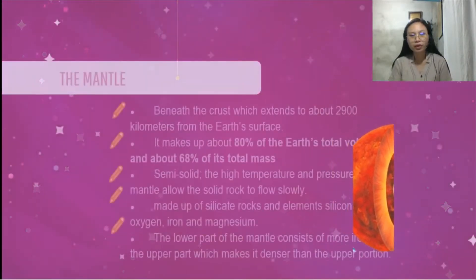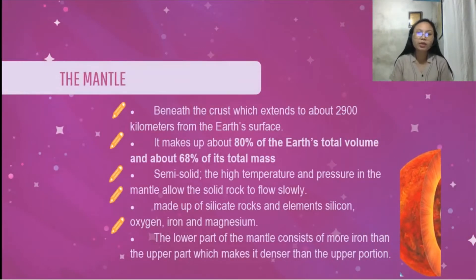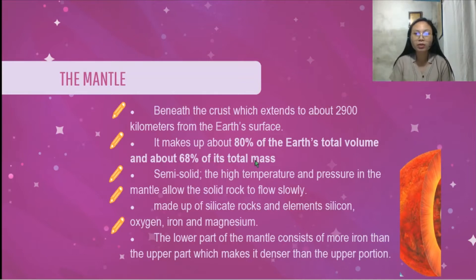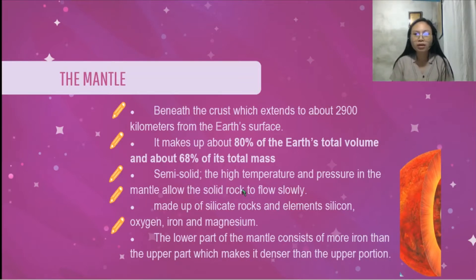Let's proceed to the mantle, which is the second layer. The mantle is beneath the crust and extends to about 2,900 kilometers from the earth's surface. It makes up about 80% of the earth's total volume and about 68% of its total mass. As we can see in the figures, the mantle is the largest part of the earth. It is semi-solid, which means the high temperature and pressure in the mantle allow the solid rock to flow slowly. The upper part of the mantle is composed of solid rocks.